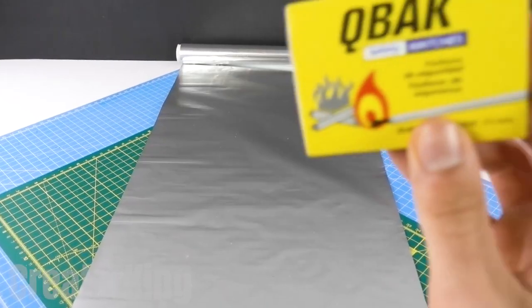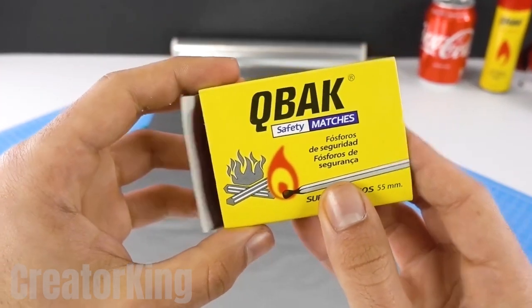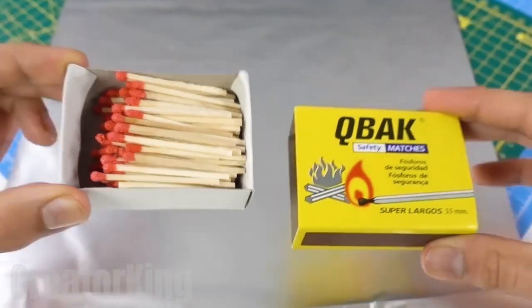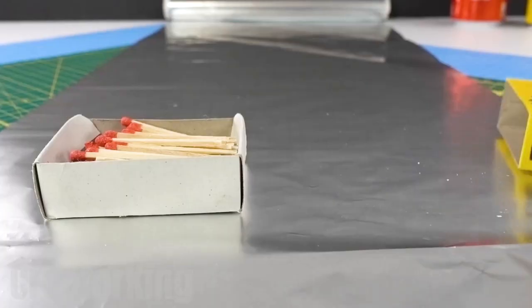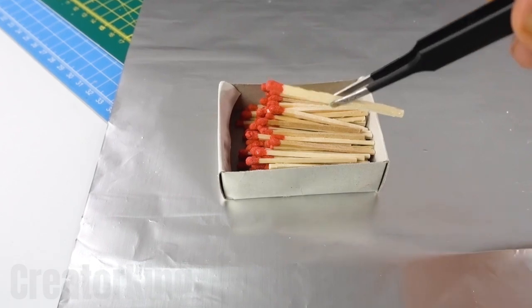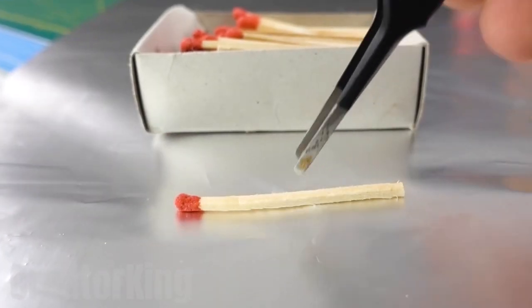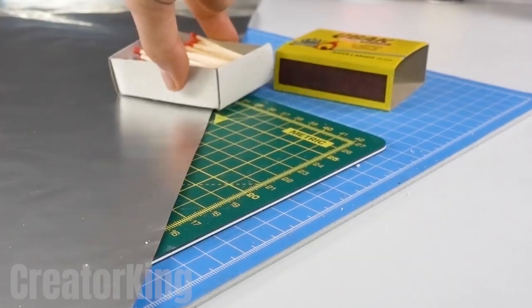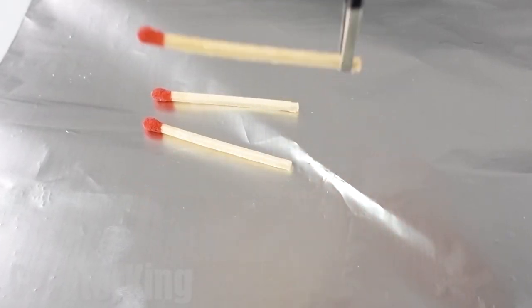Hi King Creator fans! To start off with today's first invention, we'll need some aluminum foil and a box of matches. Remove the cover with the striking strips and take a few matches. Three of them will be enough.